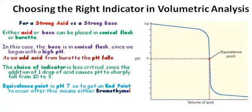The equivalence point is at pH 7, and to get an endpoint to occur after that means we can use either bromothymol blue or methyl red, which would give us a good endpoint in the right spot.